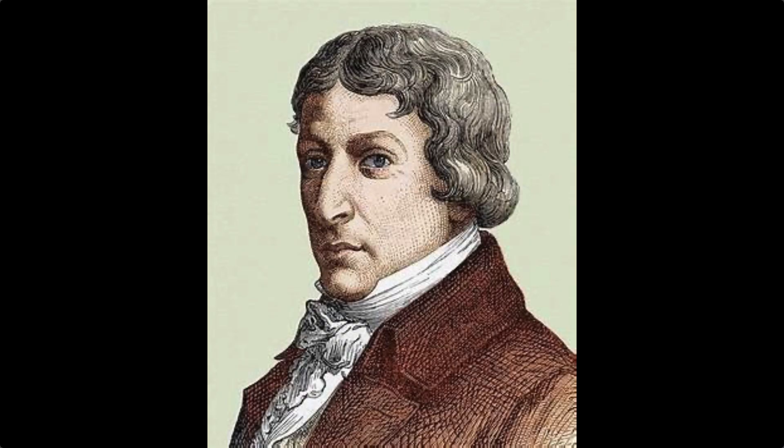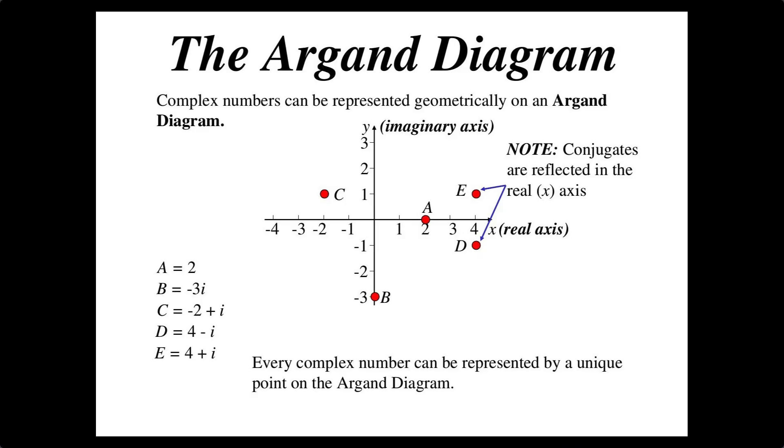Then a mathematician called Argand showed that a diagram called the Argand diagram could represent this algebra in a plane having one axis with the real numbers, and an axis at right angles to it with i times the real numbers.